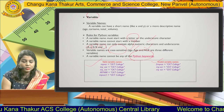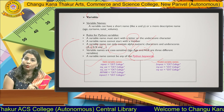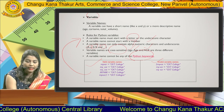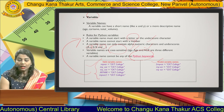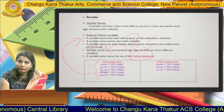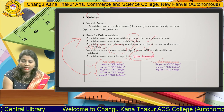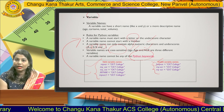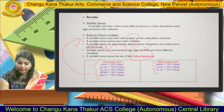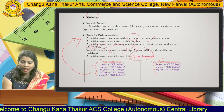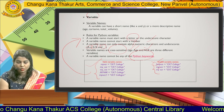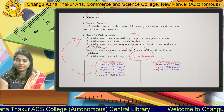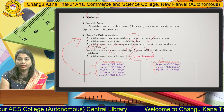Valid variables are those which follow the rules. These are all examples of valid variables. Invalid variables are those that break the rules. The first invalid example starts with a number, which is invalid. The second includes a dash, which is also invalid. The third includes a space, which also makes it an invalid variable.